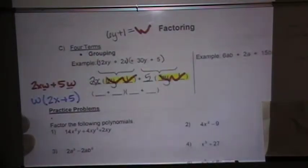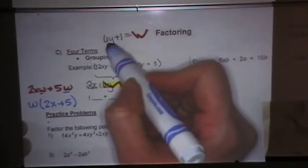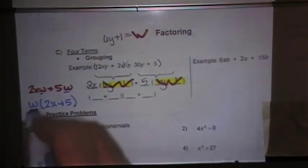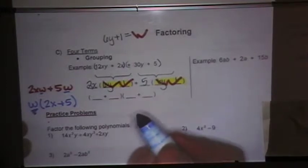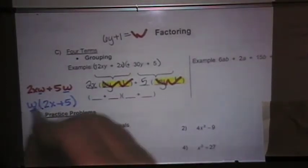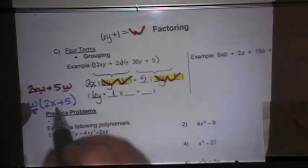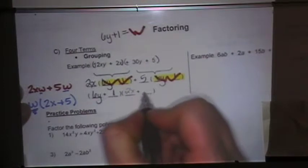But remember, we said up here that w isn't really w. It's 6y plus 1. So I can take this w out and put 6y plus 1 in its place, which is how I get my final answer. The w becomes 6y plus 1, and this is my 2x plus 5.